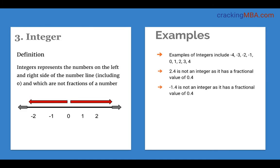The next set includes integers. Integers include all the negative numbers and positive numbers including 0 which are represented on the number line and which are not fractions. So for example, 2.4 is not an integer, similarly minus 1.4 is also not an integer. Other examples of integers include minus 4, minus 3 and so on, 0 and 1, 2 and so on up to infinity.